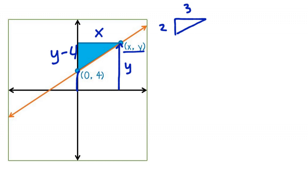So rise over run, which we know from the previous triangle, is supposed to be 2/3, should be equal to the same rise and run in this similar triangle. Rise again in the similar triangle is (y minus 4) over the run, which is x.